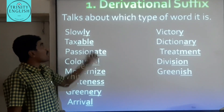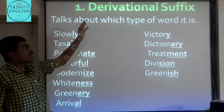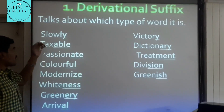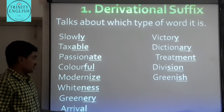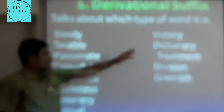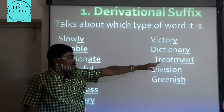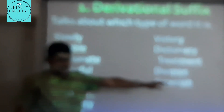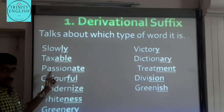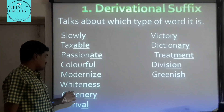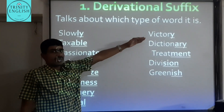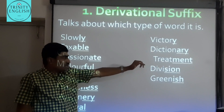Derivational suffixes indicate the type or category of a word. They include endings such as -ly, -able, -ate, -ful, -ize, -ness, -ery, -al, -y, -ary, -ment, -ure, and -ish. Examples: 'slowly,' 'taxable,' 'passionate,' 'colourful,' 'modernized,' 'whiteness,' 'greenery,' 'arrival,' 'victory,' 'dictionary,' 'treatment,' 'literature,' and 'greenish.'